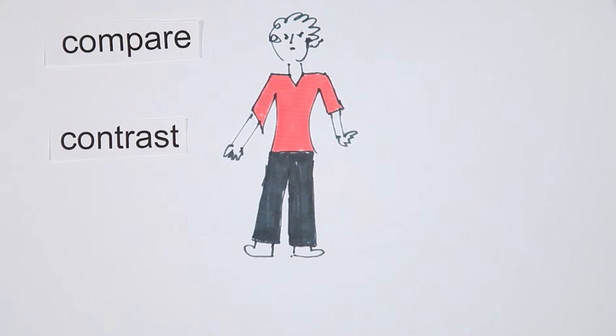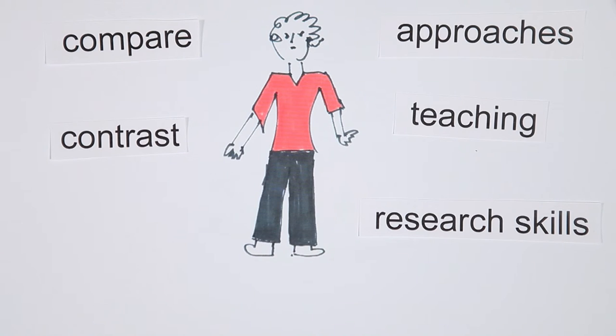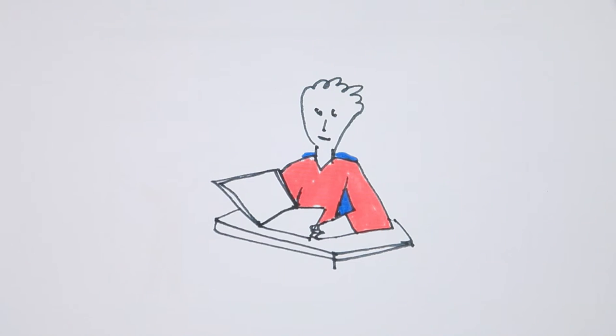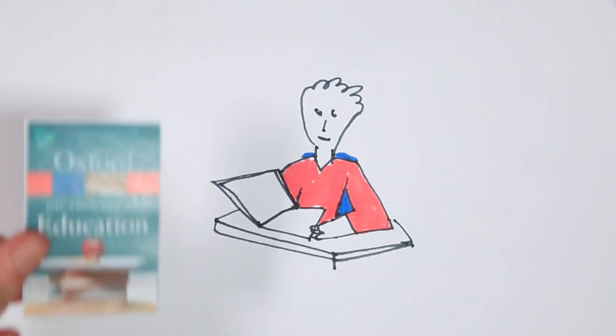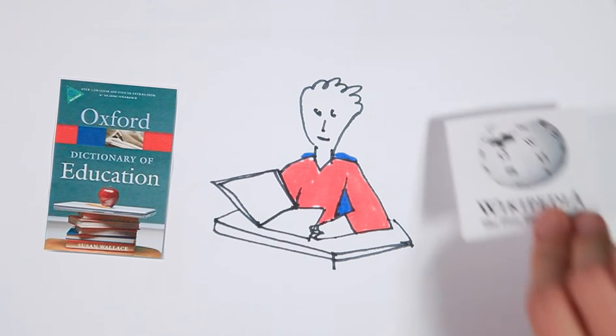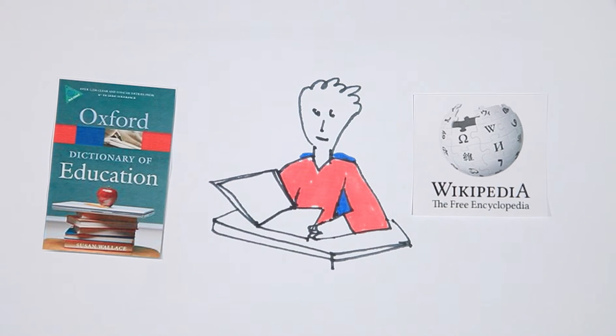Now he needs to look at the subject words and look them up in reference works like subject-specific encyclopedias and dictionaries. Dave can also use Wikipedia at this stage but he's not going to cite it in his work. Dave also has access through his library to Credo Reference.